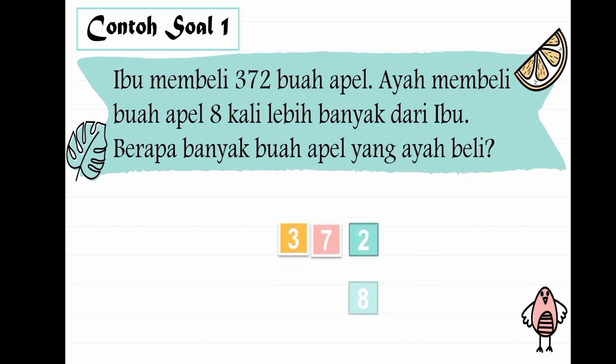372 dikali 8. Oke, hasilnya berapa ya? Yang dikerjakan jangan lupa dari angka yang paling belakang. Angka satuannya: 2 dikali 8 hasilnya 16. Berarti yang ditaruh di bawah angka 8 adalah angka 6. Yang disimpan angka 1.